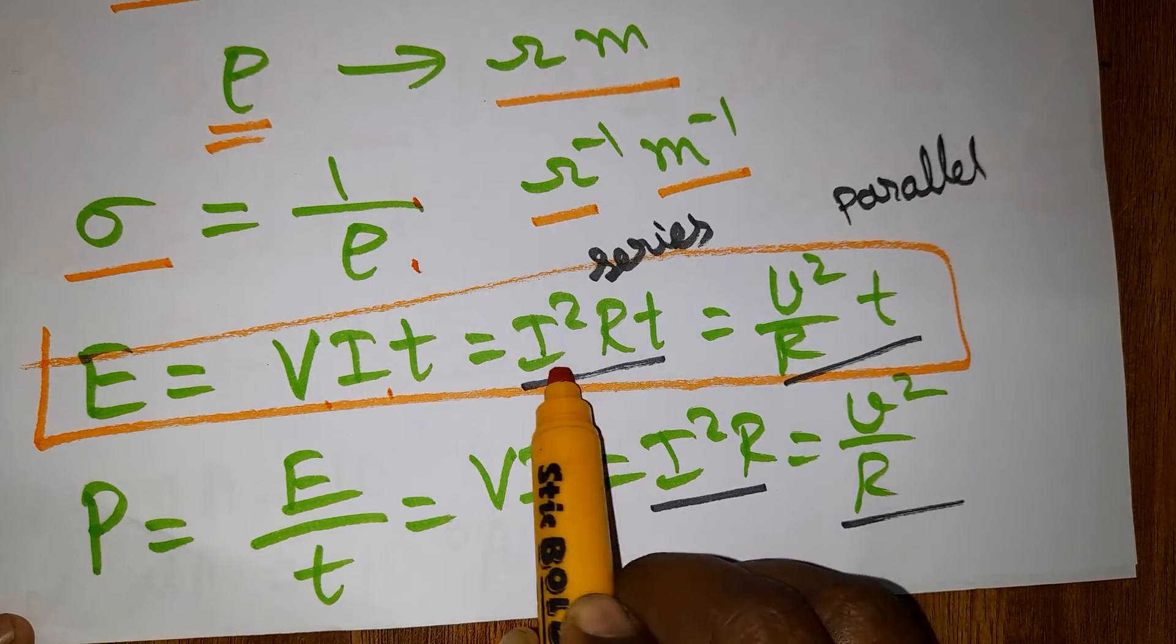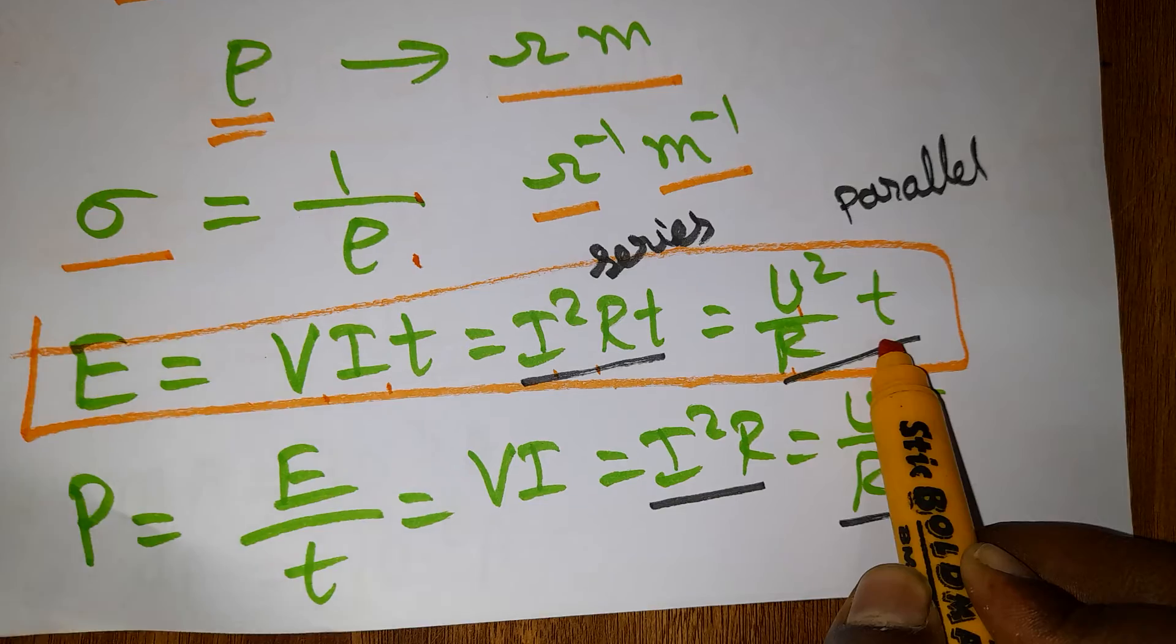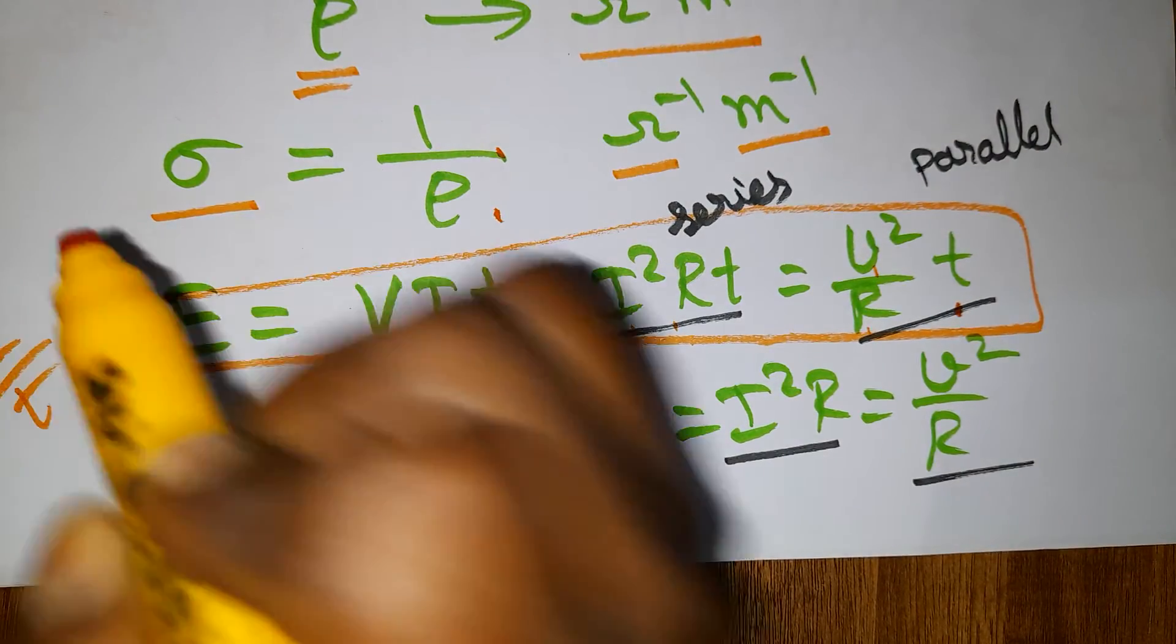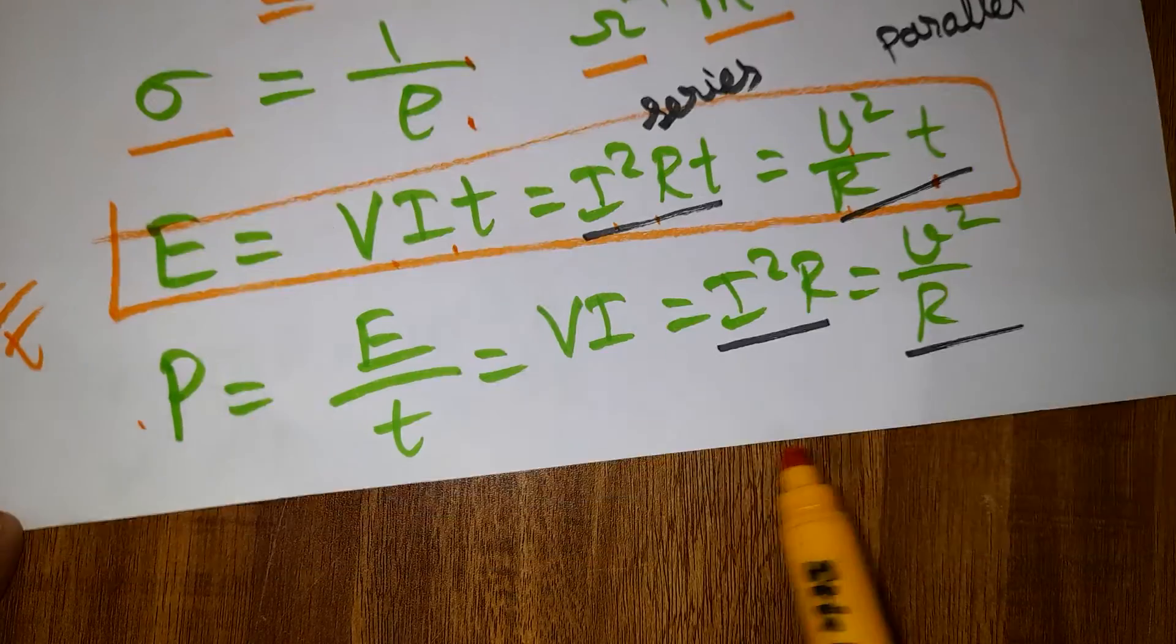Power equals energy per unit time. When you remove time from the energy formulas, you get the power formulas.